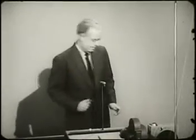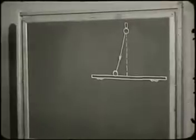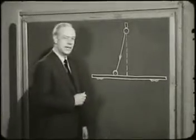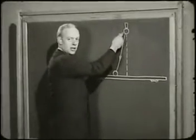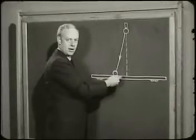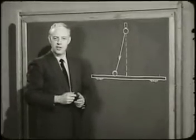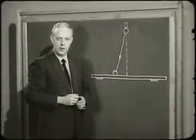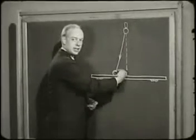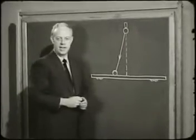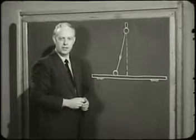Now suppose you were in this accelerated frame of reference. How could you explain this motion? Gravity is the only force acting on this ball, so it should fall straight down. But if the law of inertia is to hold, there must be a force pushing sideways on the ball in this direction to cause it to deviate from the vertical path.